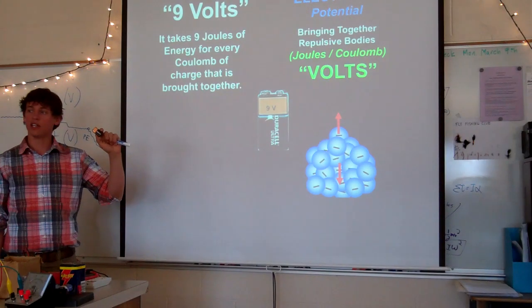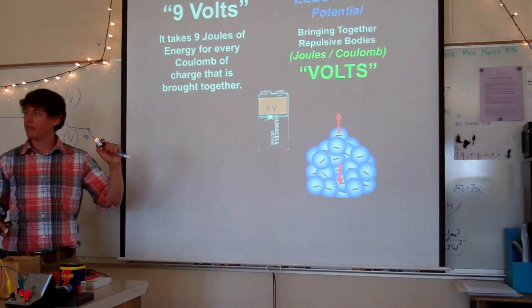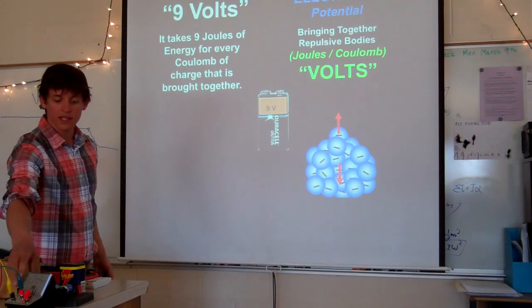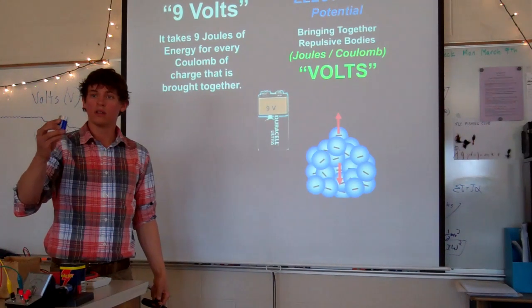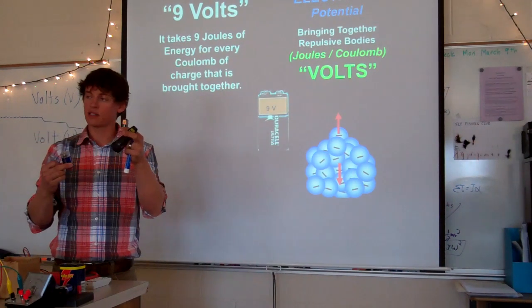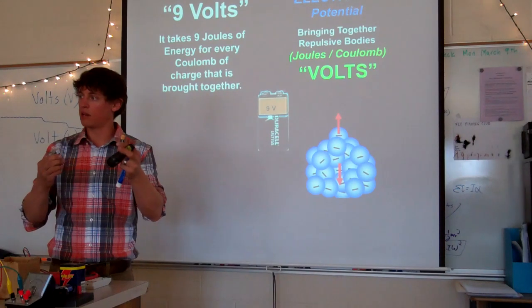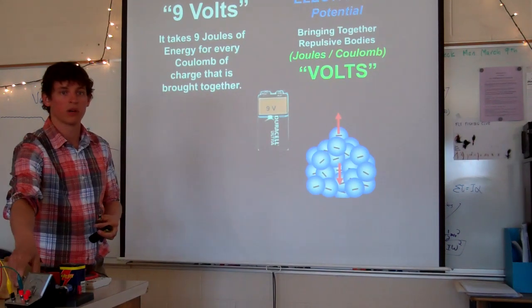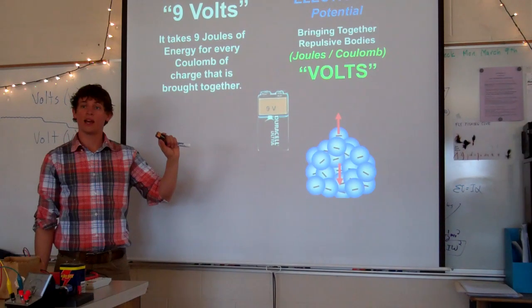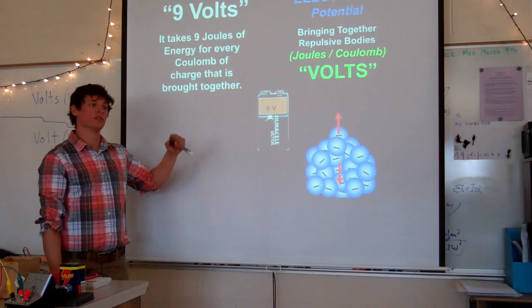It means that it takes nine joules of energy for every coulomb of charge that is brought together. Now in a battery there can be like 5,000 coulombs. So in this battery right here there's about 5,000 coulombs of charge. This one maybe a little less because it's a little smaller. But in the thousands of coulombs somewhere.